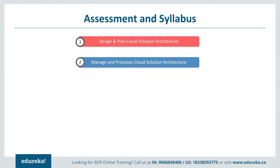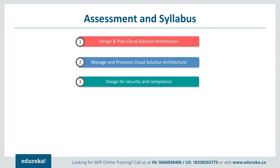Other key areas in Section 1 include creating a migration plan, licensing, network and management planning, and testing and proof of concept. Section 2 covers Managing and Provisioning Cloud Solution Architecture. Candidates should be able to configure network topologies, including extending to on-premises or hybrid networks and multi-cloud environments, along with security features and data protection. Other topics include configuring individual storage systems, data storage, application data processing, compute processing security, and access management.